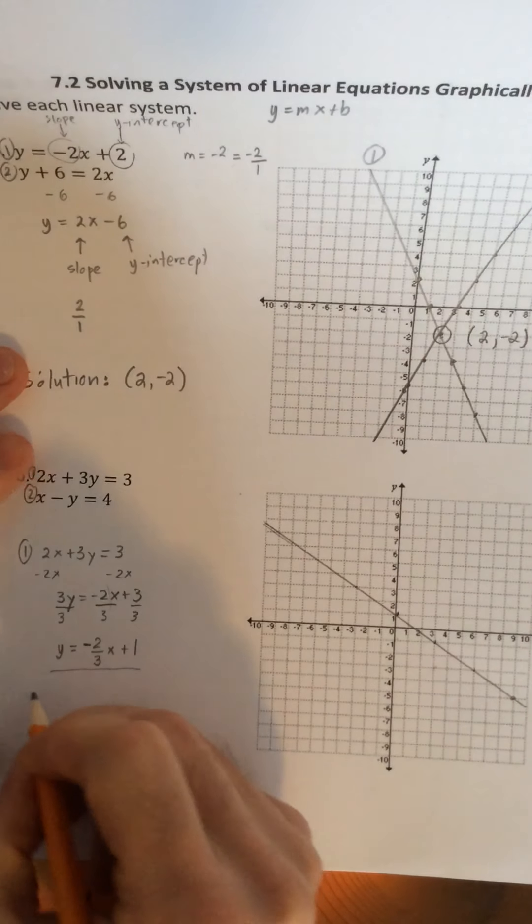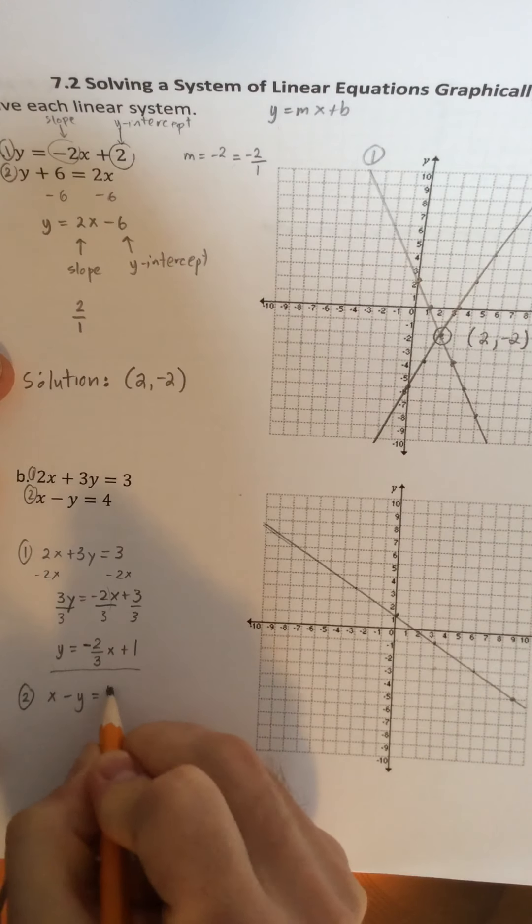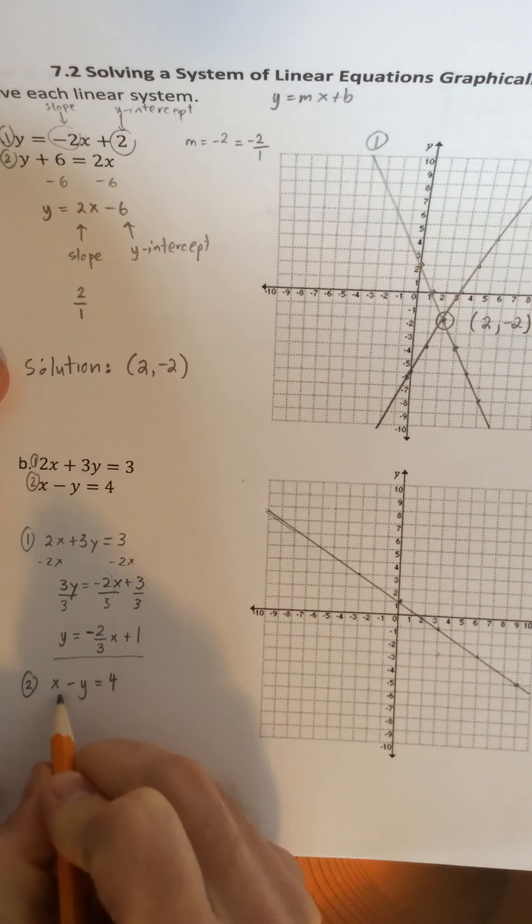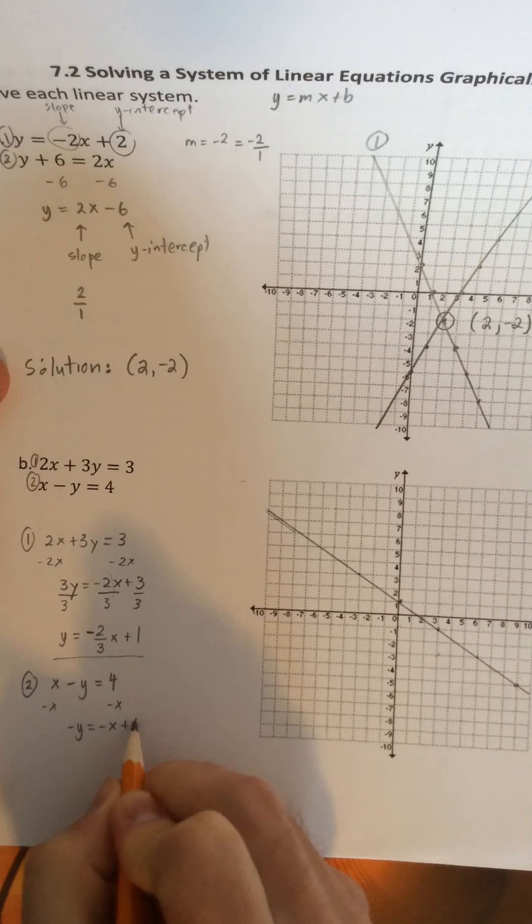Now when we go to do the second equation, we need to rearrange this as well because it's not in slope intercept form. So again, start with isolating y by subtracting the x. Or if it's a negative x, you would add it. So if we subtract x from both sides of this equation, we'd be left with negative y equals negative x plus 4.